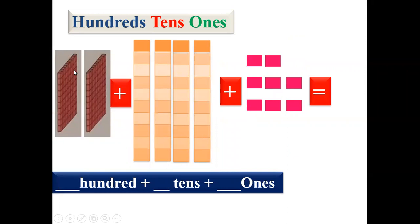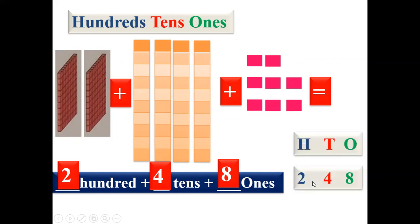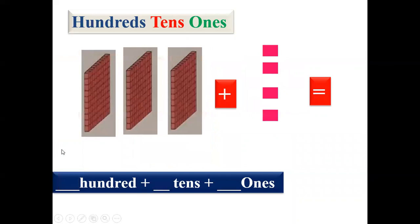Now look at the next one — one hundred and two hundred, so we'll write two hundreds. And here we can see columns: one, two, three, four — four tens columns. Then ones: one, two, three, four, five, six, seven, eight — eight ones are there. So we'll write two in hundreds, four in tens and eight in ones.